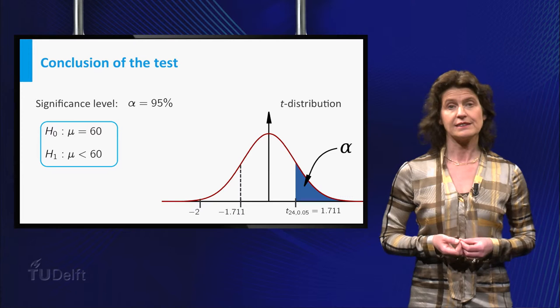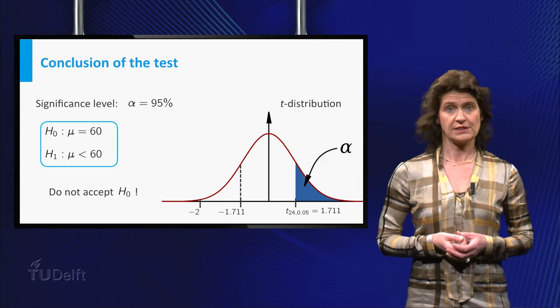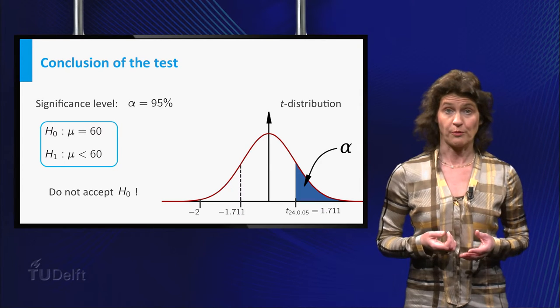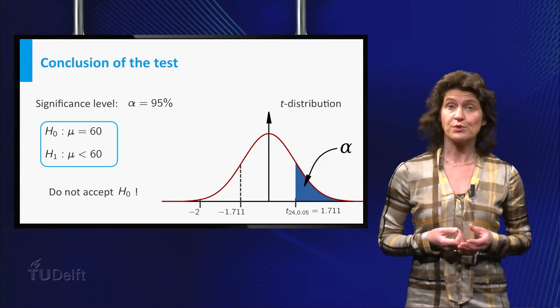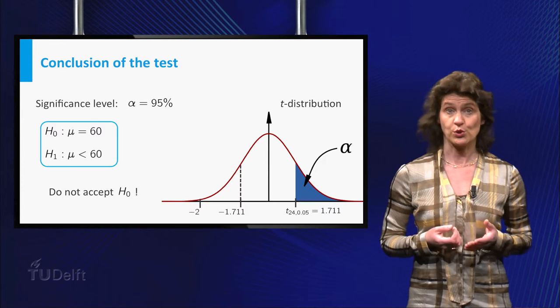And you see that it does lie in the critical region, so you can reject the null hypothesis that the school meets the national norm. The data seem to provide enough evidence to conclude that the school performs worse than other schools.